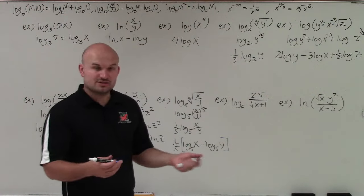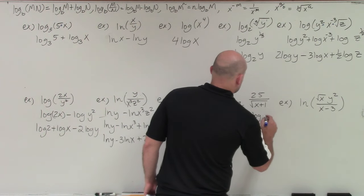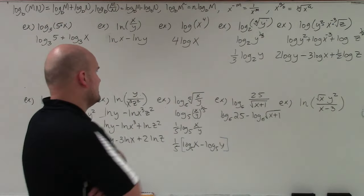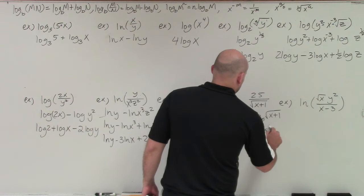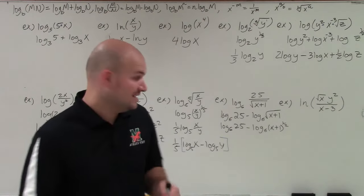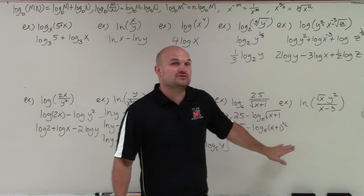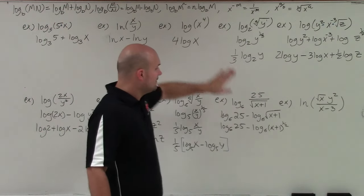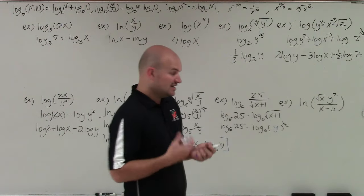In the next example, I have a quotient, so I separate it first: log base 6 of 25 minus log base 6 of the square root of x plus 1. This one trips up many students. When we have the square root of (x+1), we can rewrite it as (x+1) to the 1/2. But what do we do with terms separated by addition inside the logarithm? Nothing — we cannot separate them using the properties of logarithms. The properties only work for multiplication, division, and raising to a power. Think of the entire expression (x+1) as a single variable.